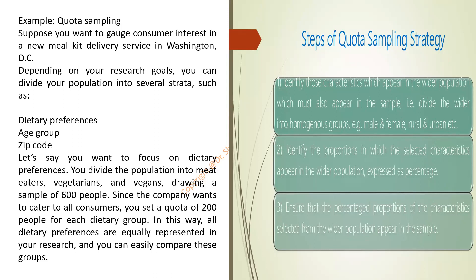Then identify the proportion in which they are selected — you have to identify that proportion and keep exactly the same proportion in your sample size. For example, suppose you want to study consumer interest in a new meal kit delivery service in Washington DC. I have prepared a new meal kit and I want to find out in Washington DC how many customers are interested in this meal kit.